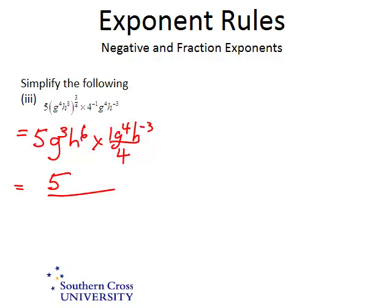G to the 3 times G to the 4 is G to the 7. H to the 6 times H to the negative 3 is 6 plus negative 3, or just 6 take 3, which is 3. So this would be best written as 5 G to the 7 H cubed all over 4.